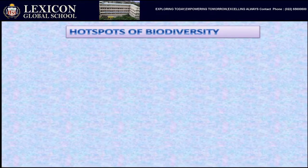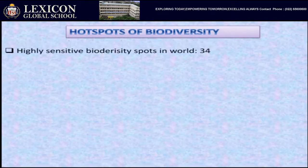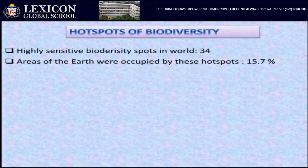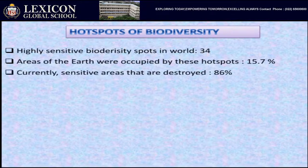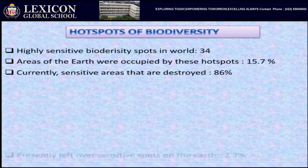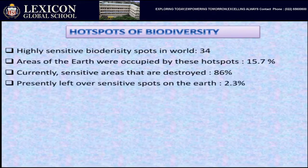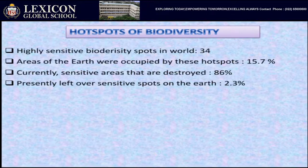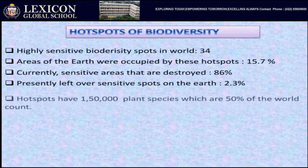There are 34 highly sensitive biodiversity hot spots in the world. These areas occupy 15.7% of the earth. Currently, 86% of these sensitive areas have been destroyed. The presently remaining sensitive spots on earth is only 2.3%. Hot spots have 150,000 plant species, which are 50% of the world count.